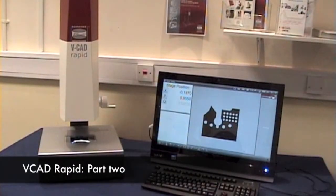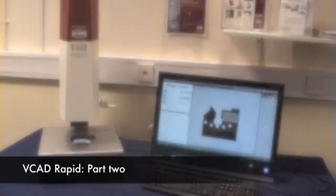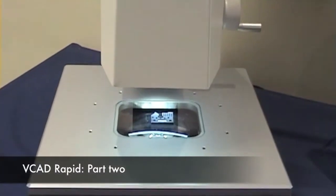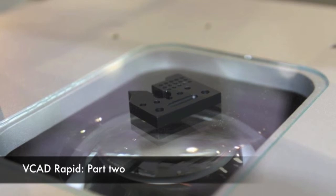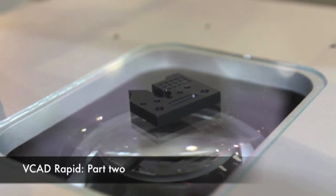Part 2 of the VCAD Rapid demonstration looks at how a sequence of measurements can be made to analyze a surface in a single click. We will also see how a unique feature can be used to find the component orientation prior to setting the reference datum and calculating the whole geometry.